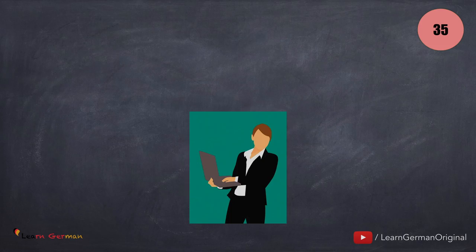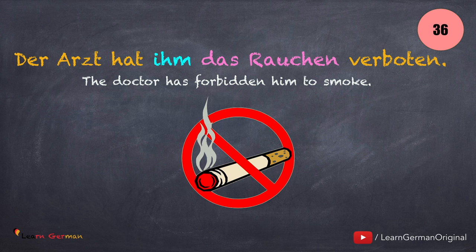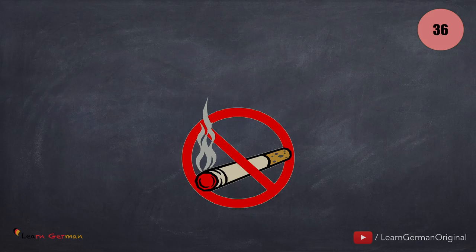Here is the next one: Der Arzt hat ihm das Rauchen verboten. Verboten ist Partizip-Perfekt for verbieten. Jemandem etwas verbieten.